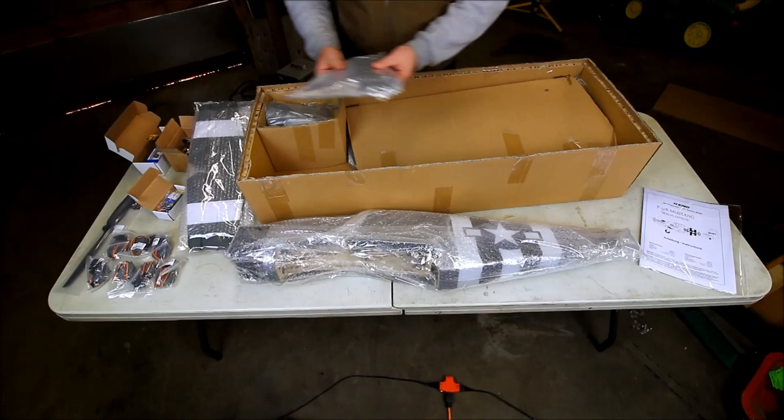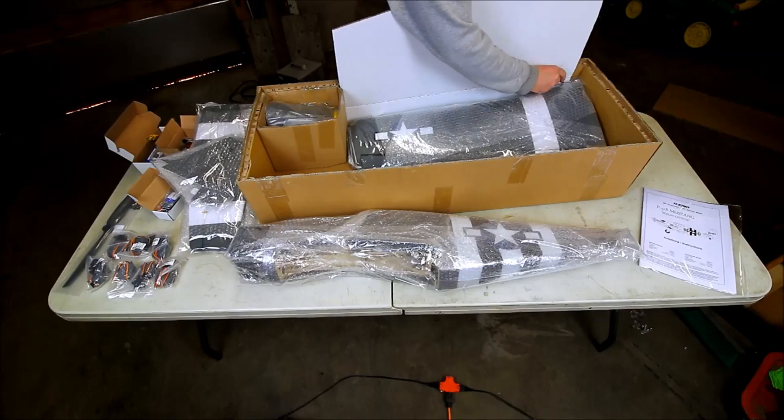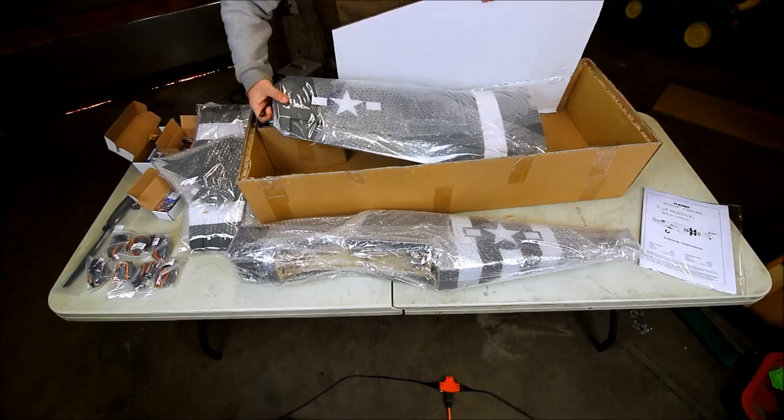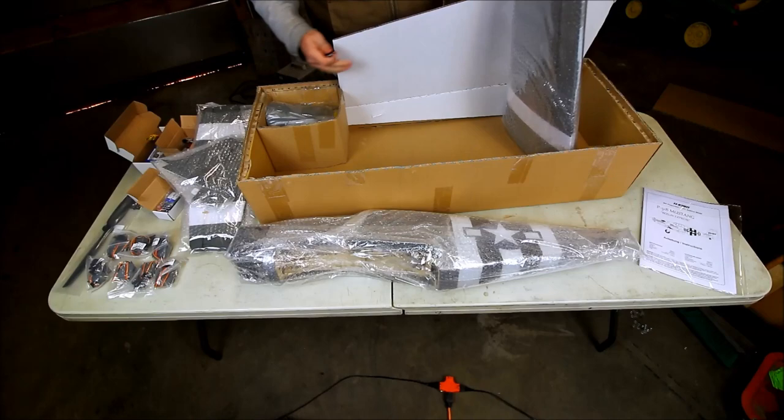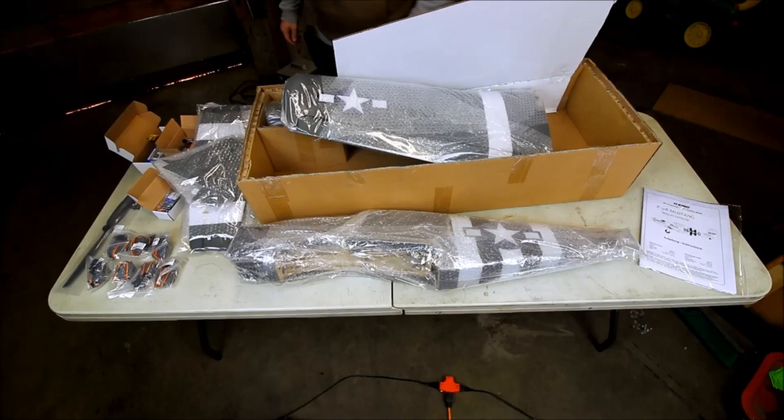I did trim some of the plastic tape here. I figured I'd show you how it comes packaged. Some people are interested in stuff like that. You want to know how it survives the trip. Get your horizontals, elevator, your rudder here. Down here we have the wings. So we'll get everything out of the wrap and on the table here and then I'll show you what everything looks like.